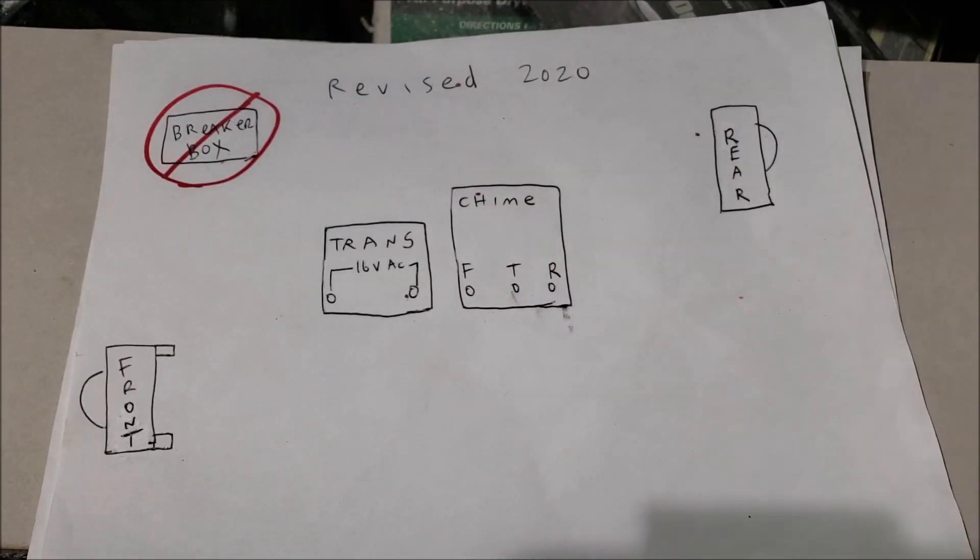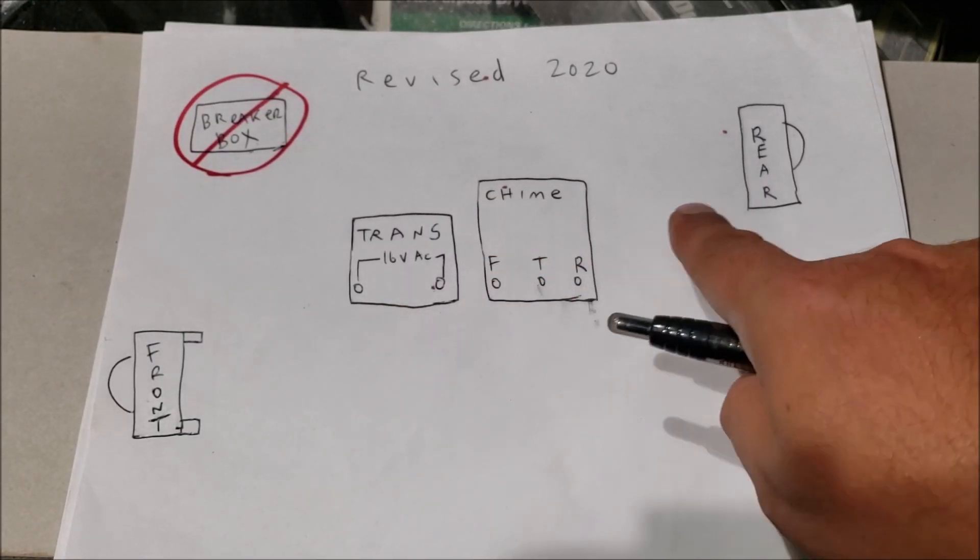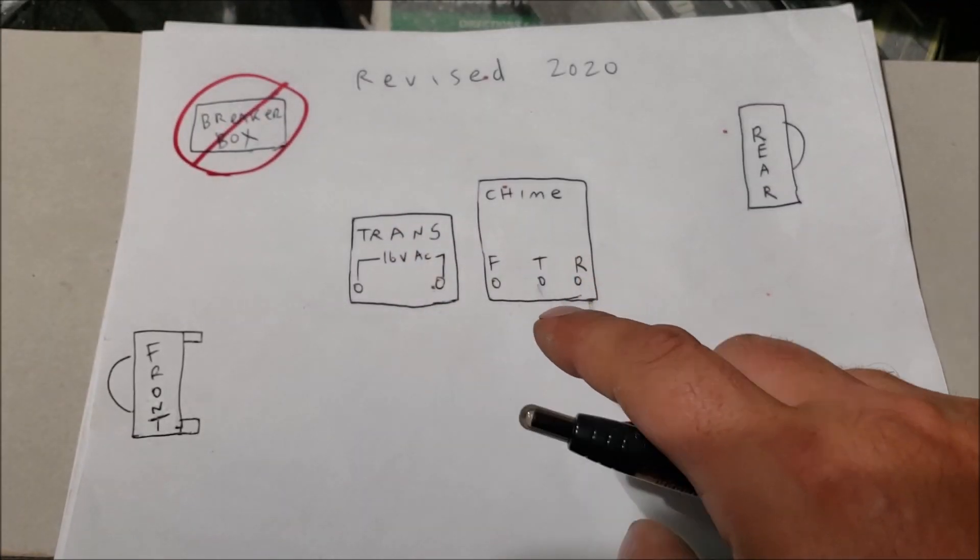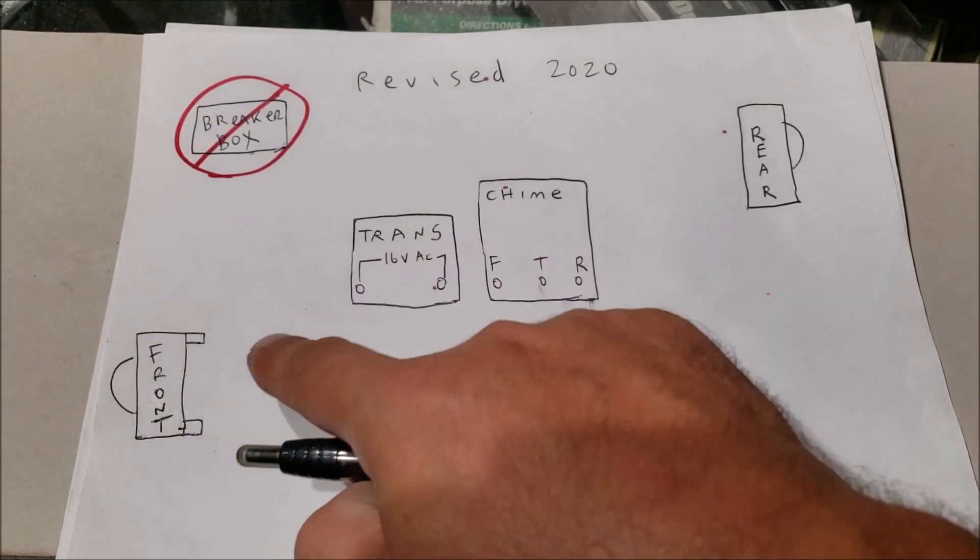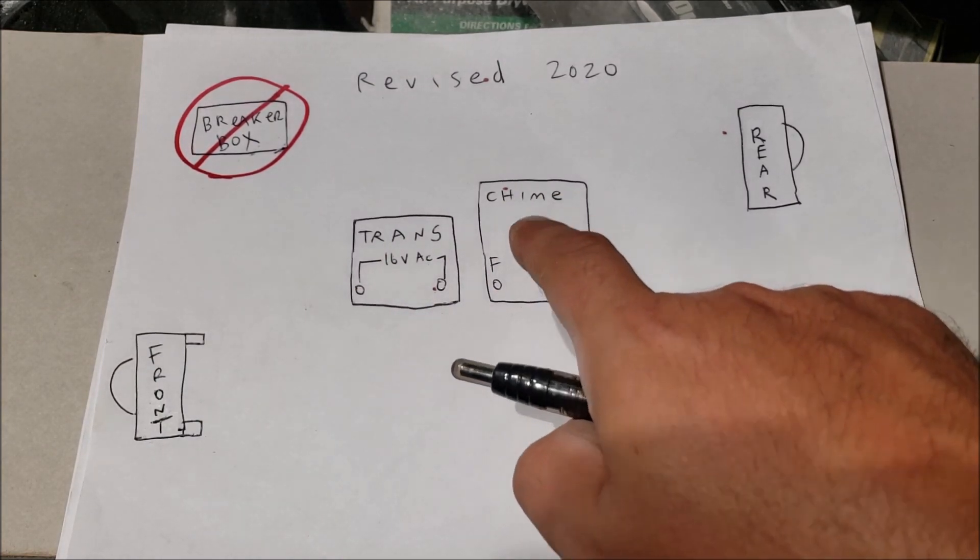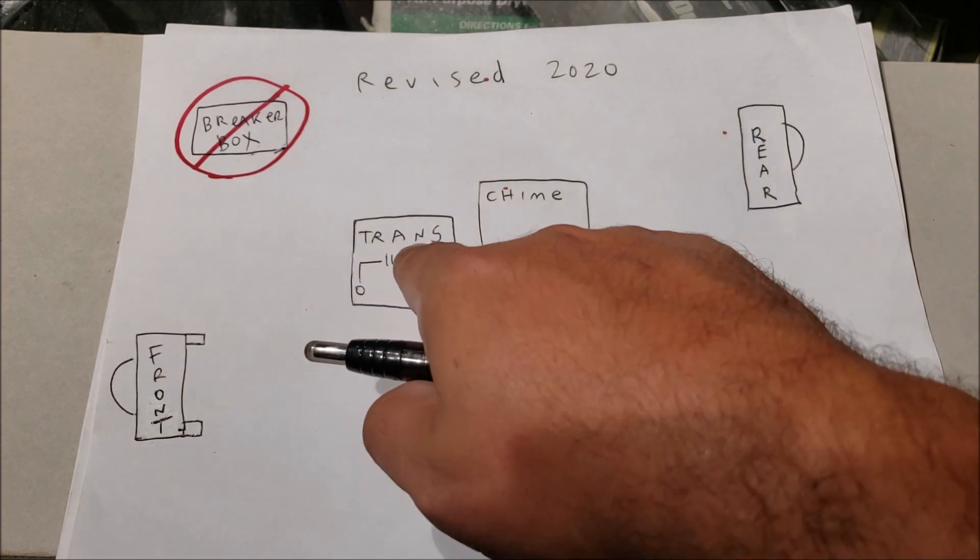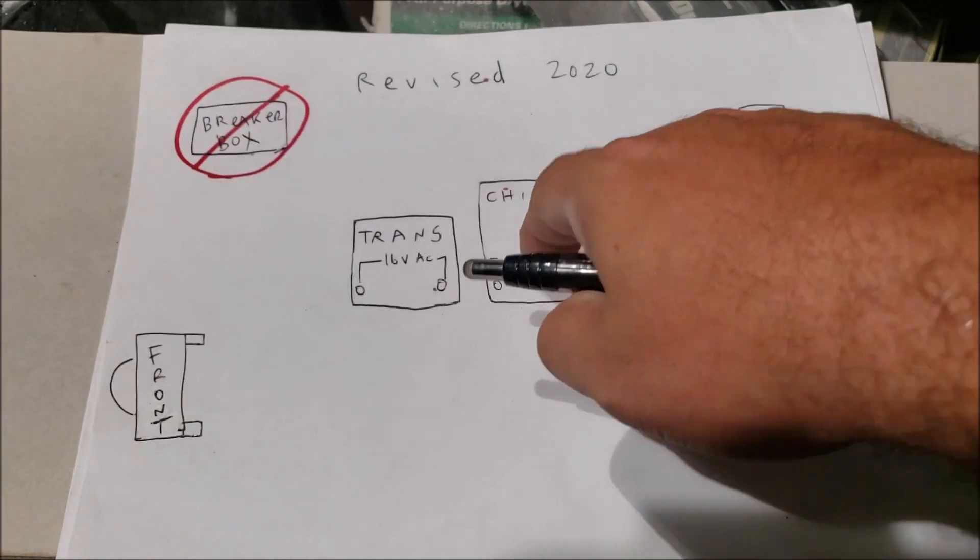This is super confusing to wire up and you can screw this up real easy. You got to wire one switch at a time. We got to get from the front switch to the farthest component. Let's wire that up first. Take one piece of red and white wire. We got to run it here, pass the transformer all the way to the chime.